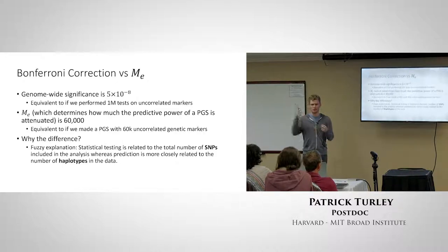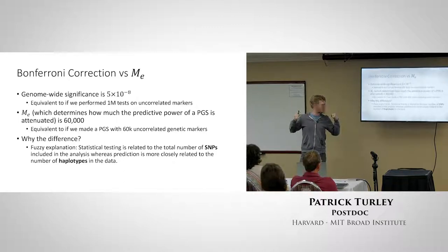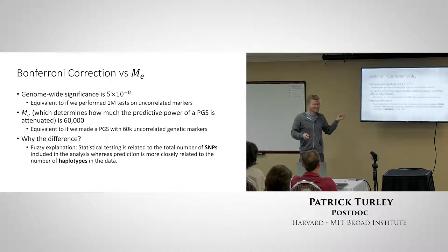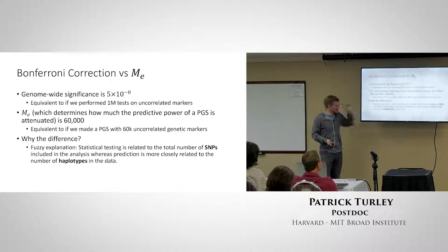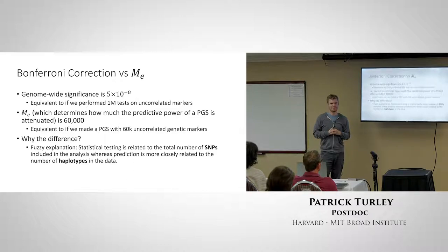One number is about SNPs and the other is about haplotype blocks. This is maybe unsatisfying, but there is a real difference — and I think it's because statistical testing and prediction are fundamentally different things.